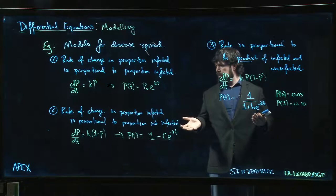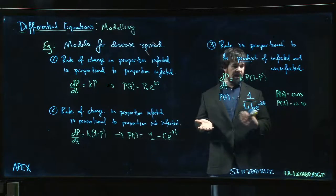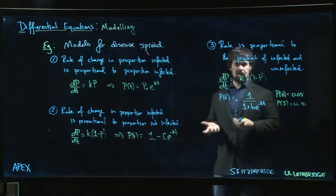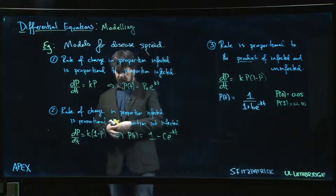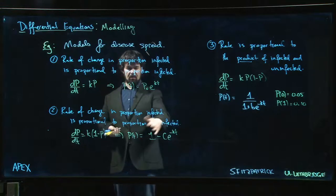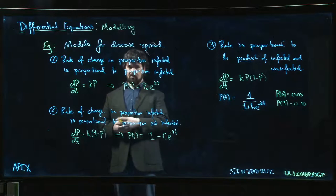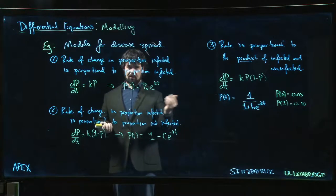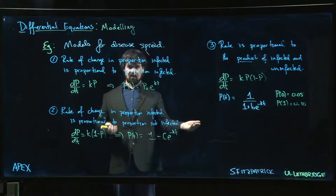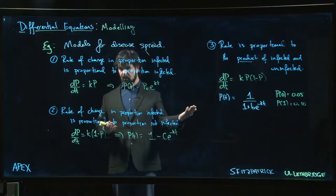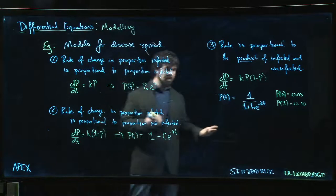Now which one is best probably depends on more sophisticated data fitting. You probably would need more than two data points to decide which one works, because any of these models can be made to fit two data points. What about if you have 200 data points or 2,000 data points? Then we can start looking to see which one actually makes sense, or possibly none of them makes sense and you have to go to more sophisticated models.